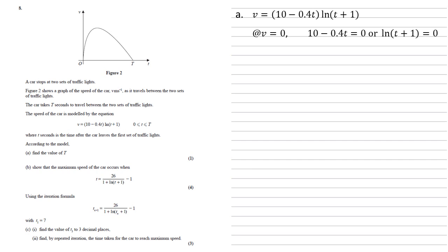We can see quite quickly that zero, zero is the bit given by ln of t plus 1, because ln of 1 is equal to zero. So we're going to look at the other part. We're going to set 10 minus 0.4t equal to zero. So 0.4t is equal to 10, and t is equal to 25.